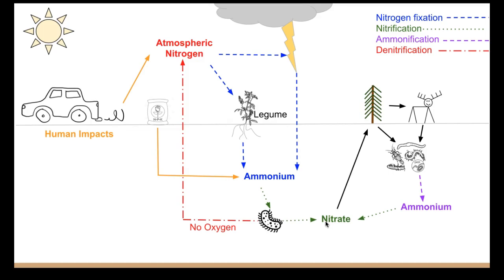Basically, that is the nitrogen cycle. This also happens in water as well, but it's using different organisms instead of using trees and legumes, things like that. It's using phytoplankton and zooplankton and it would be picked up by fish and things like that.